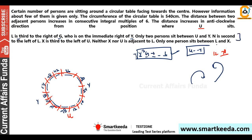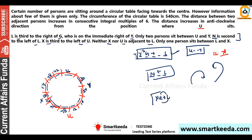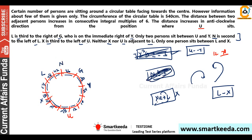Let's apply more clues. N is second to the left of L. X is third to the left of U — so counting 1, 2, 3, X is placed here. X and U are not adjacent to L. Only one person sits between L and X. Y is fixed, G is fixed as immediate right of Y, and L is third to the right of G. N is second to the left of L, so N is placed accordingly.